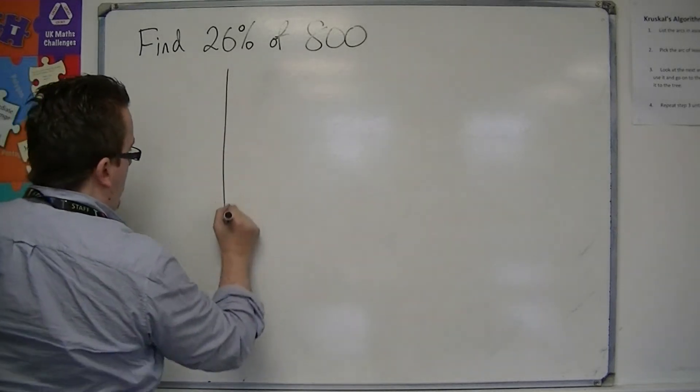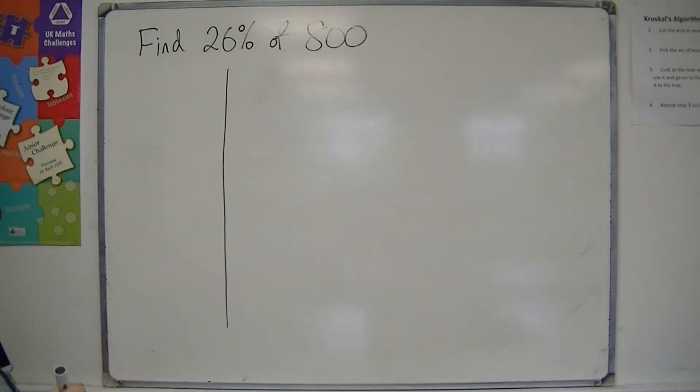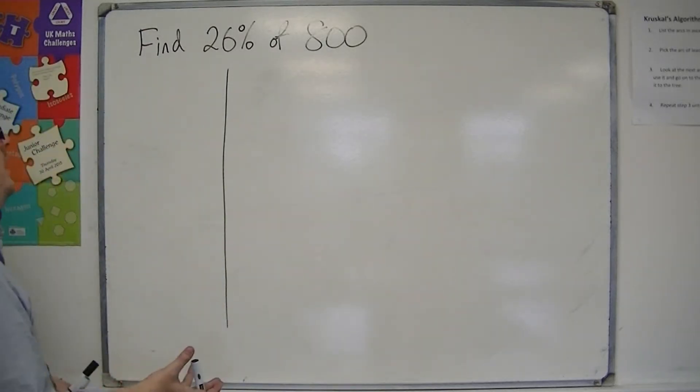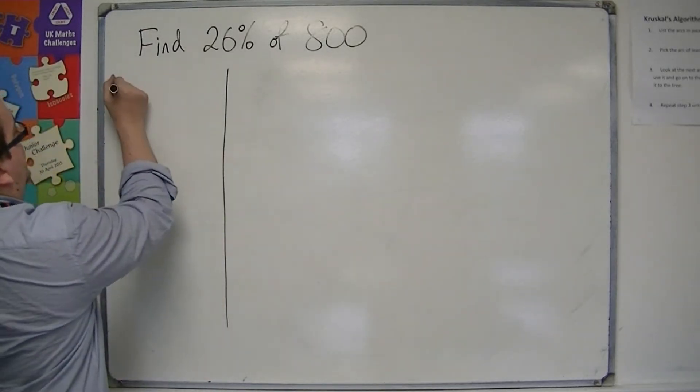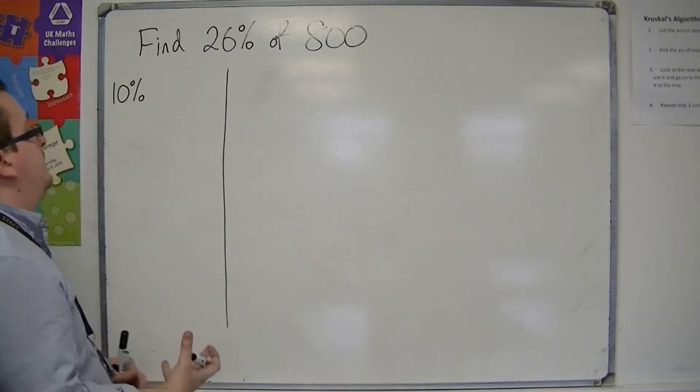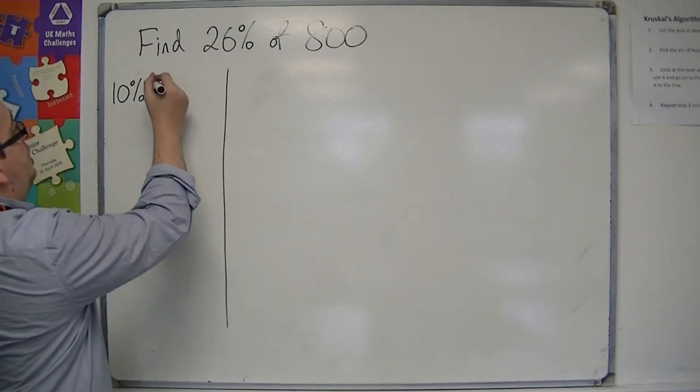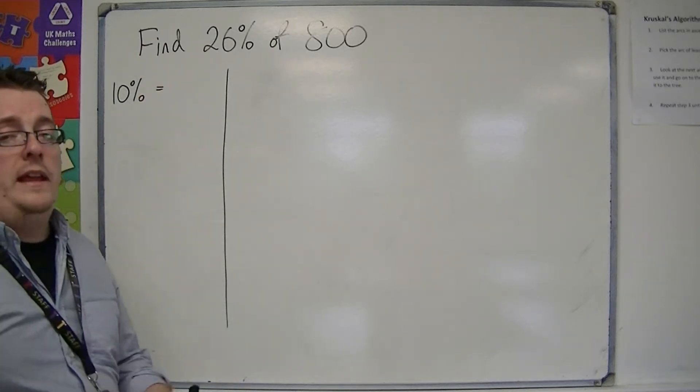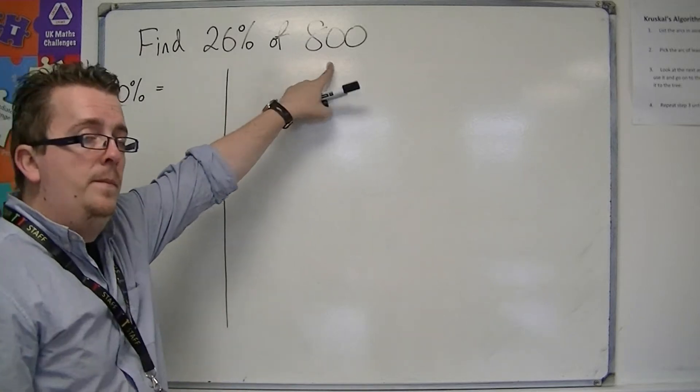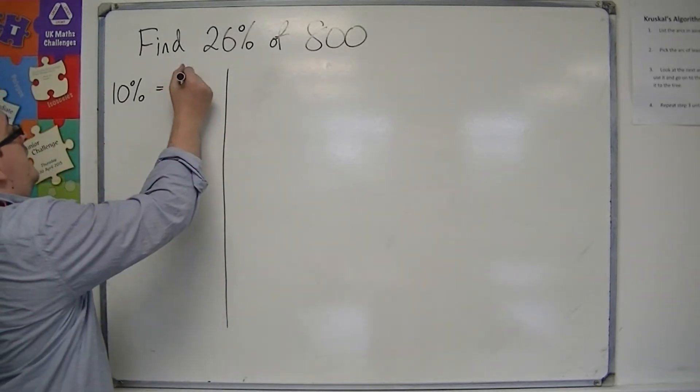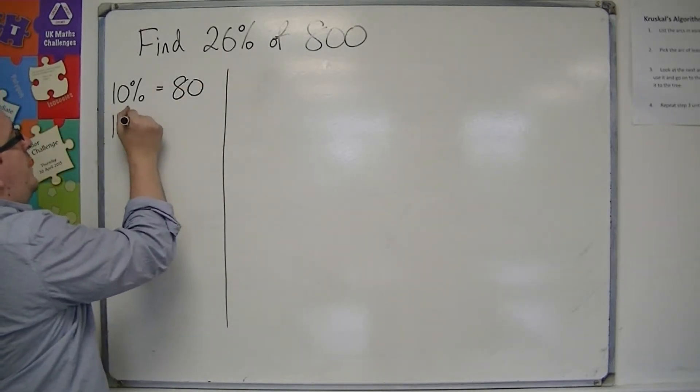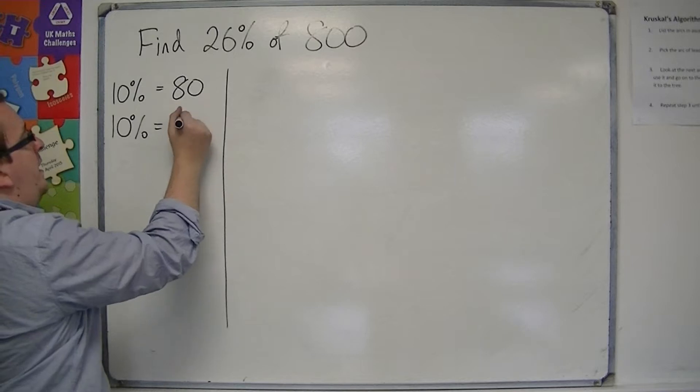The first method breaks the problem down into finding 10%, 5%, and 1%. First of all, find 10% by dividing 800 by 10. So 800 by 10 is 80. Now, we want 26%, so we're going to need another 10%. That would be another 80.